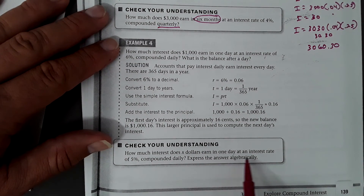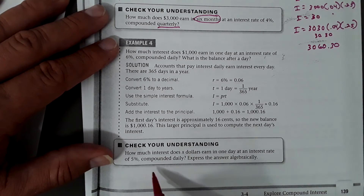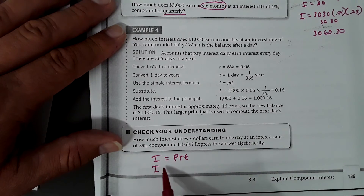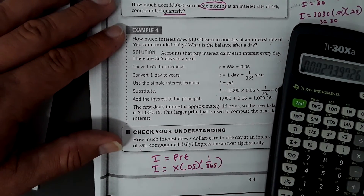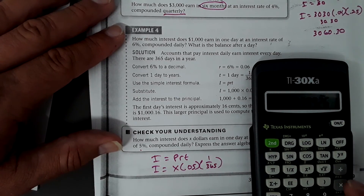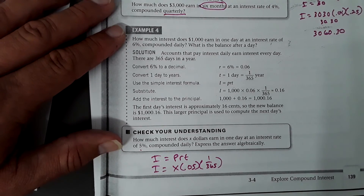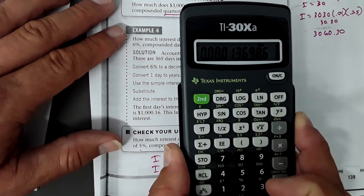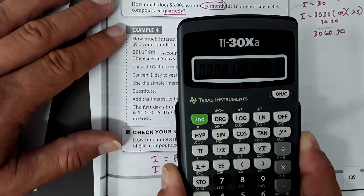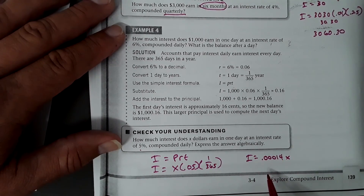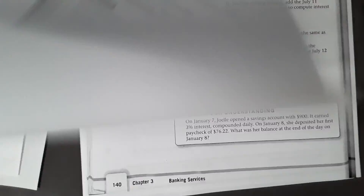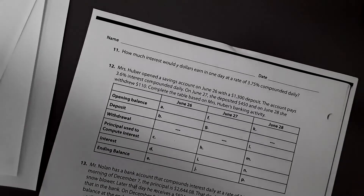How much interest does x dollars earn in one day at an interest rate of 5% compounded daily? I = PRT: principal is x, rate is 0.05, time is 1/365. Dividing 1 by 365 gives a long decimal, multiplied by 0.05 gives an even longer decimal. The interest equals approximately 0.00014 times x. That is assignment 20.